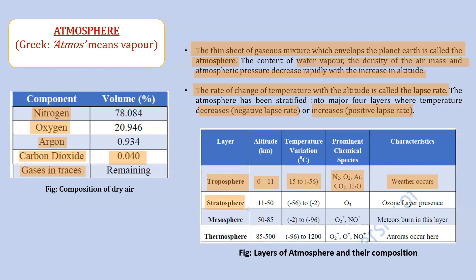The next layer is the stratosphere. It extends from 11 to 50 kilometers. Here the temperature rises with altitude, from minus 56 degrees Celsius to minus 2 degrees Celsius — so it has a positive lapse rate. The main chemical component is ozone. The key characteristic of stratosphere is that the ozone layer is present in this layer.